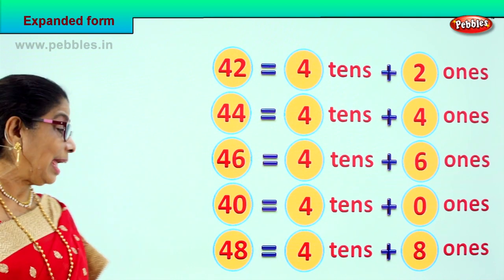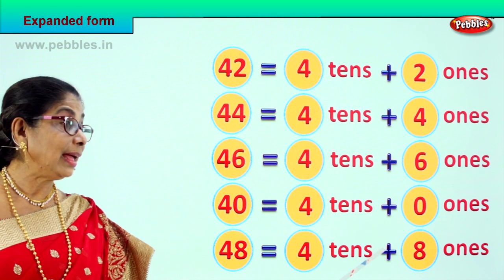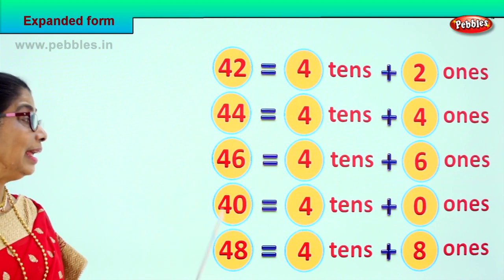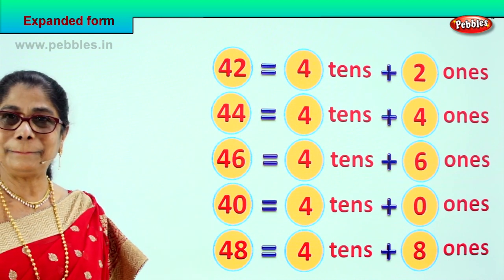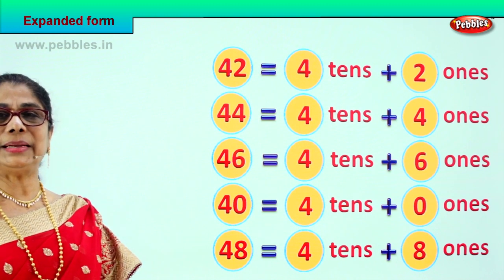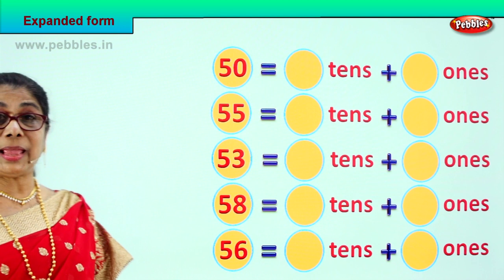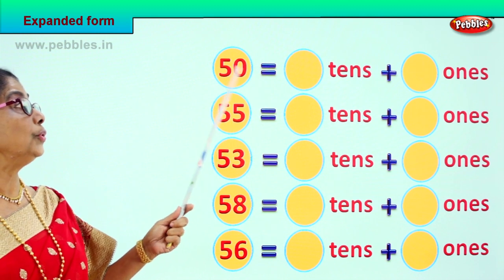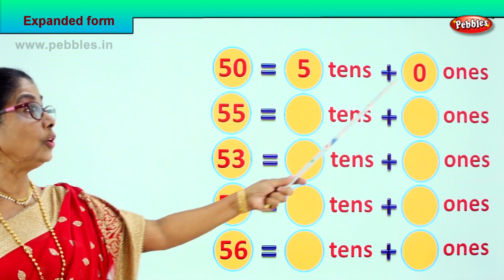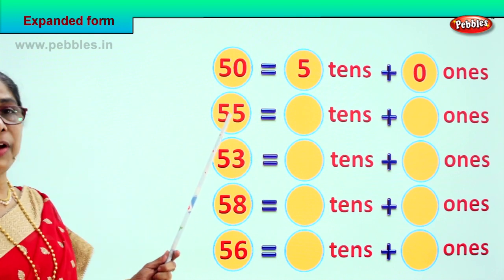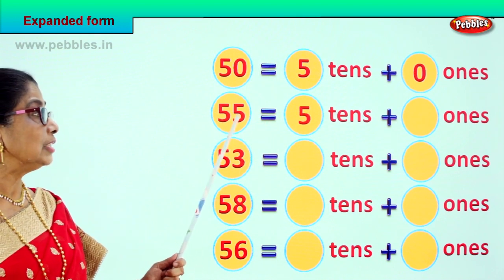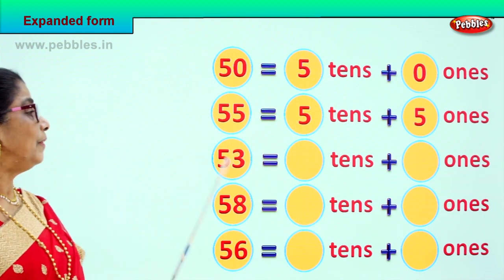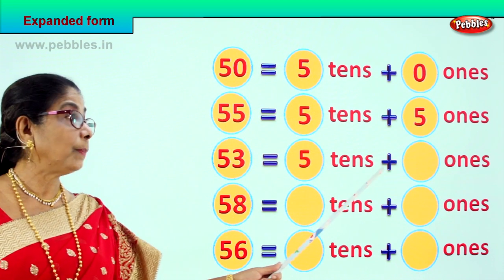What are we learning? We are learning expanded form! Let's look at another set of numbers and expand them together. The first number is 50. 50 is equal to 5 tens plus 0 ones. 55 is equal to 5 tens plus 5 ones. 53 is equal to 5 tens plus 3 ones.